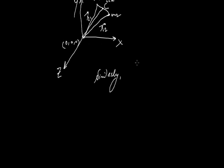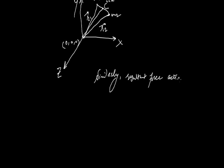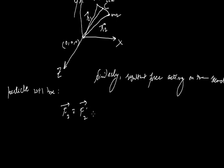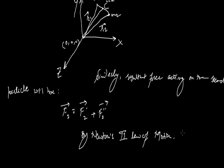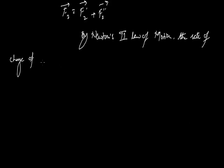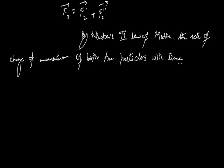Similarly, the resultant force acting on the second particle will be given by F2, which is the sum of external forces and internal forces, just like equation 1. By Newton's second law of motion, the rate of change of momentum of both particles with time is equal to the forces acting on them.